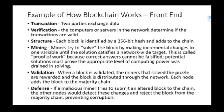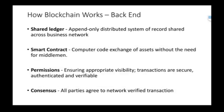The backend is a shared ledger, and you append only through the chain. The smart contract is computer code to exchange assets without the need of a middleman. There are permissions for visibility, the transactions are secure, and consensus means all nodes have to agree to the verified transaction.